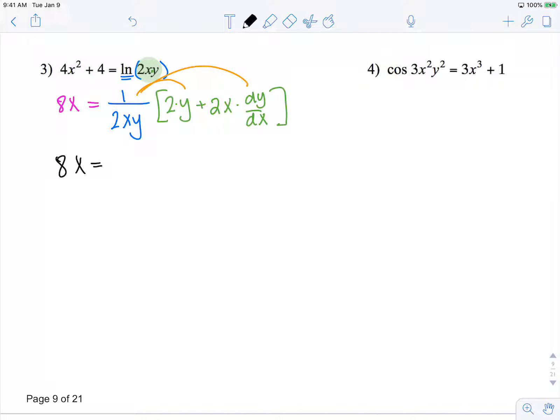What does that become? 1 over x. Right here, let me show the steps - that becomes 2y over 2xy plus